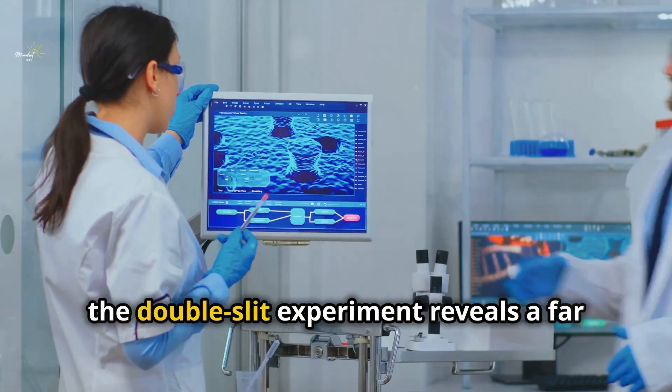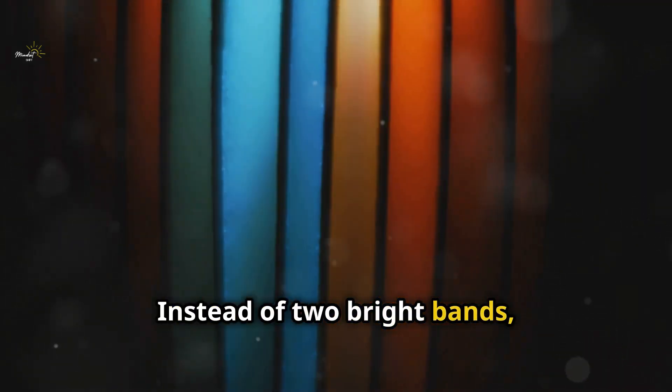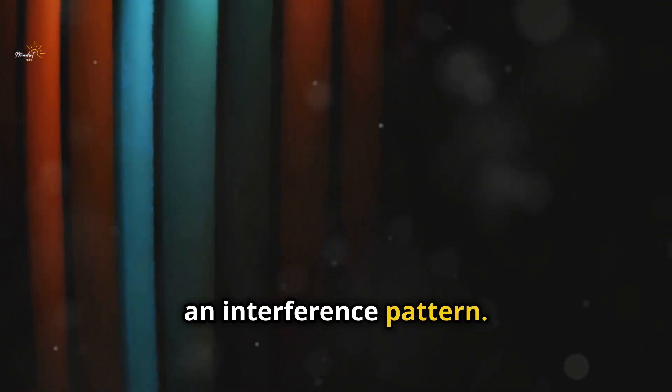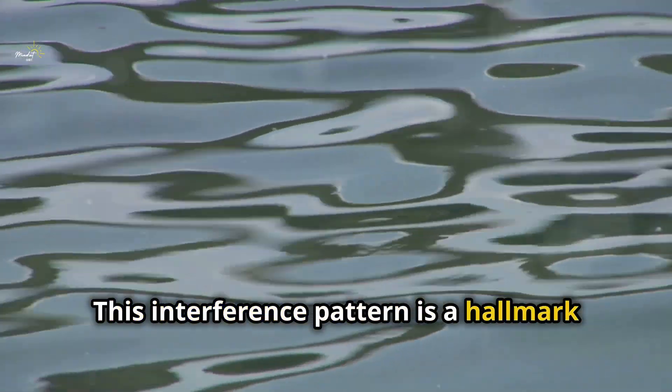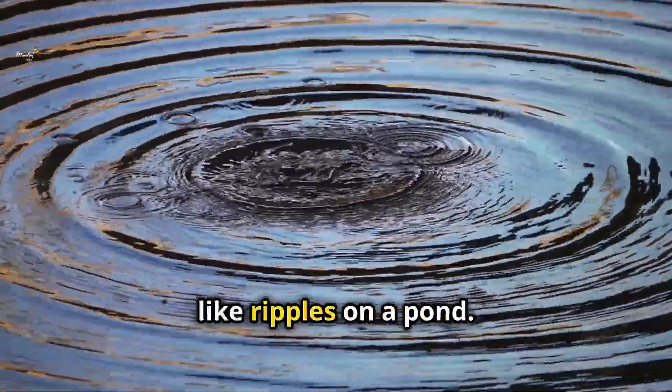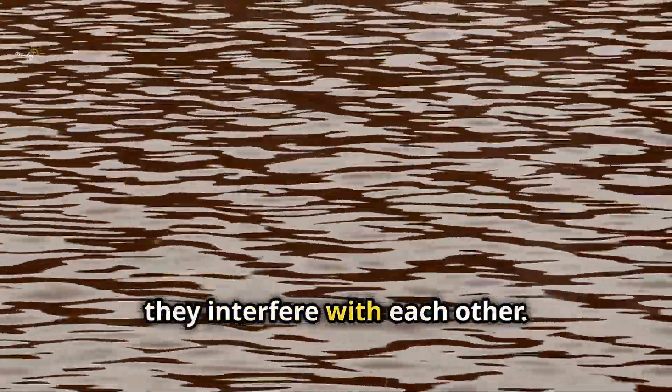However, the double-slit experiment reveals a far more intriguing pattern. Instead of two bright bands, we observe a series of light and dark fringes, an interference pattern. This interference pattern is a hallmark of wave behaviour. It arises from the interaction of waves, like ripples on a pond. When waves overlap, they interfere with each other.